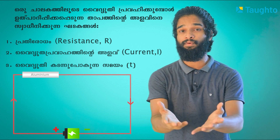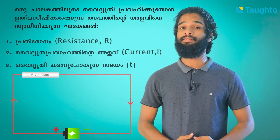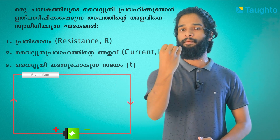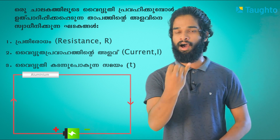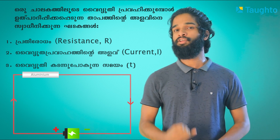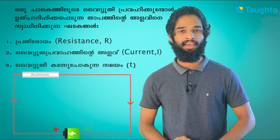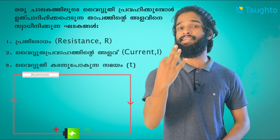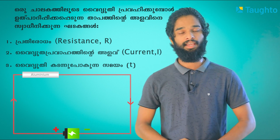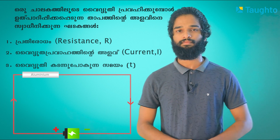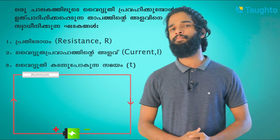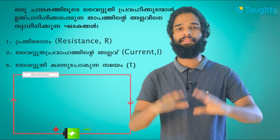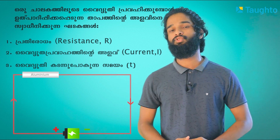We will talk about 3 things. The three are: one is the resistance R, one is the current I, and the three are the same — that is the time T. Let's talk about these three.